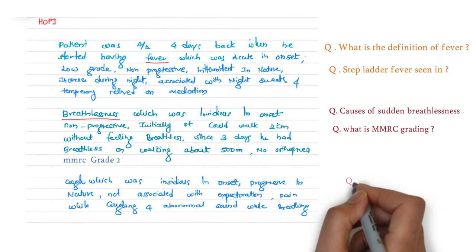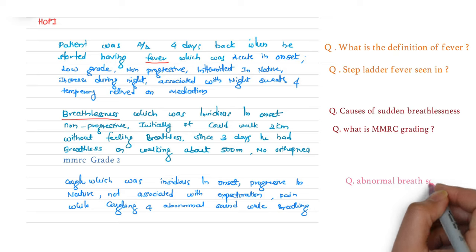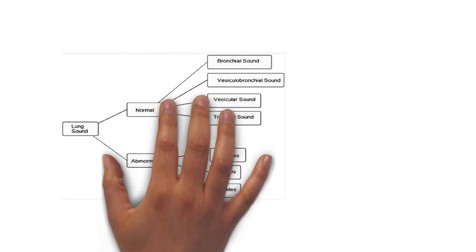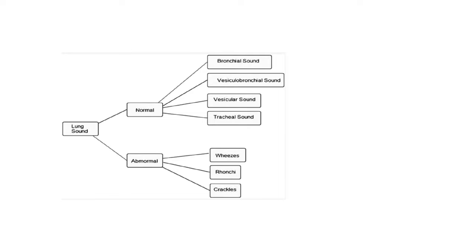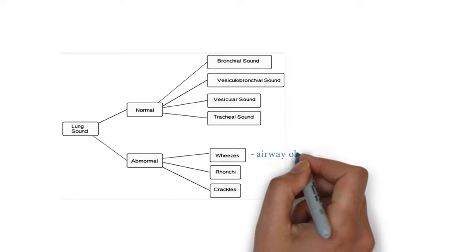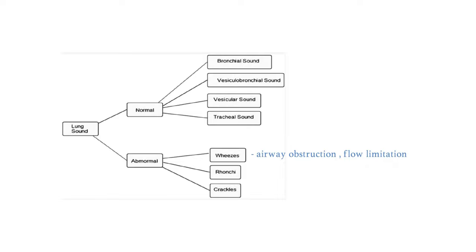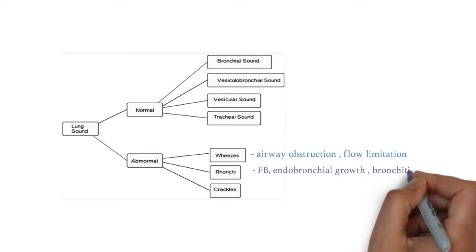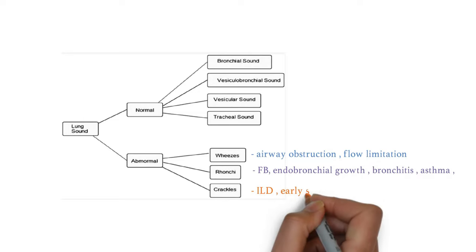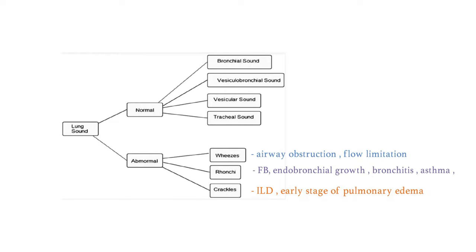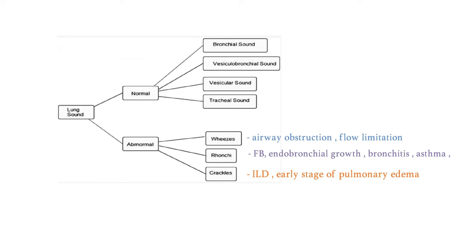Regarding cough, the patient had abnormal sound while breathing. Normal lung sounds are bronchial, vesico-bronchial, vesicular, and tracheal sounds. Abnormal sounds are wheeze, ronchi, and crackles. Wheeze is seen in airway obstruction or flow limitation. Ronchi is seen in foreign body, endobronchial growth, bronchitis, and asthma. Crackles can be seen in interstitial lung disease or early stage pulmonary edema. Take a screenshot and remember these examples.